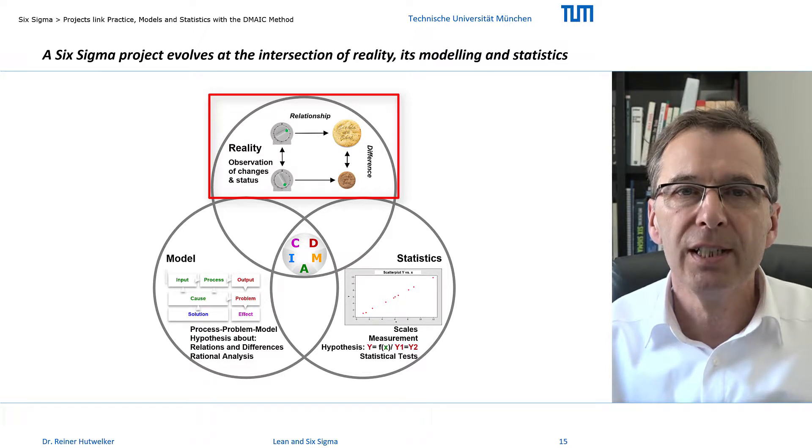This for example allows us to detect differences between cookies and that baking time is related to different colors of cookies.